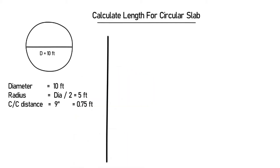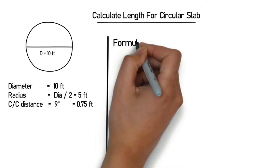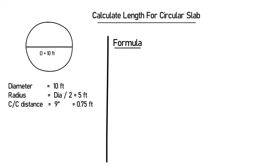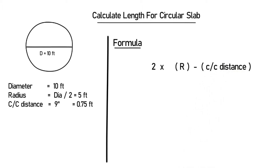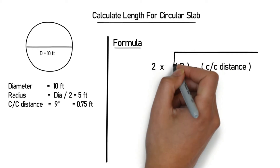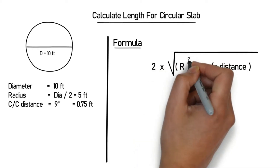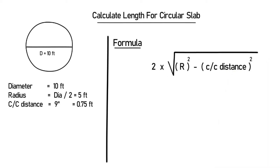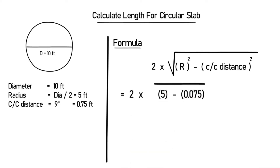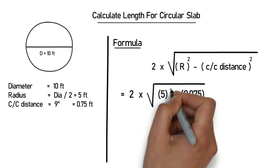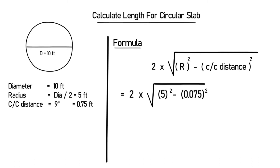For the first bar, we will use the formula: 2 multiplied by the square root of (radius squared minus center-to-center distance squared). Putting in the values: 2 × √(5² − 0.75²). After calculating this, you will get 9.88 feet.